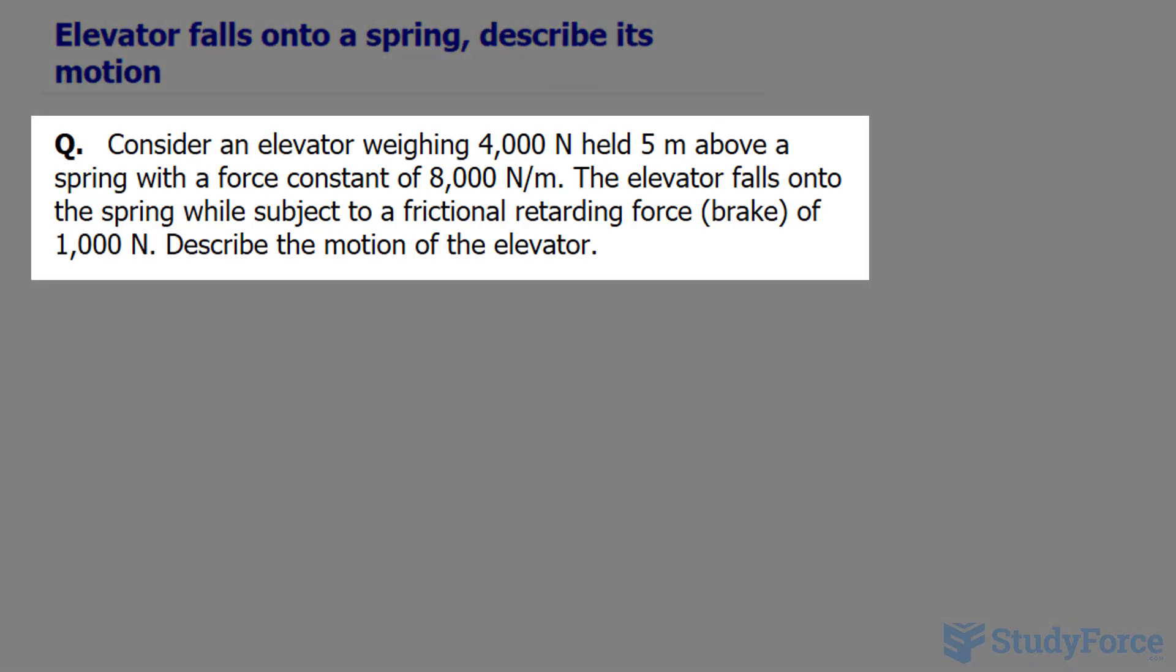The question reads: consider an elevator weighing 4,000 newtons, held 5 meters above a spring with a force constant of 8,000 newtons per meter. The elevator falls onto the spring while subject to a frictional retarding force, or brake, of 1,000 newtons. Describe the motion of the elevator.